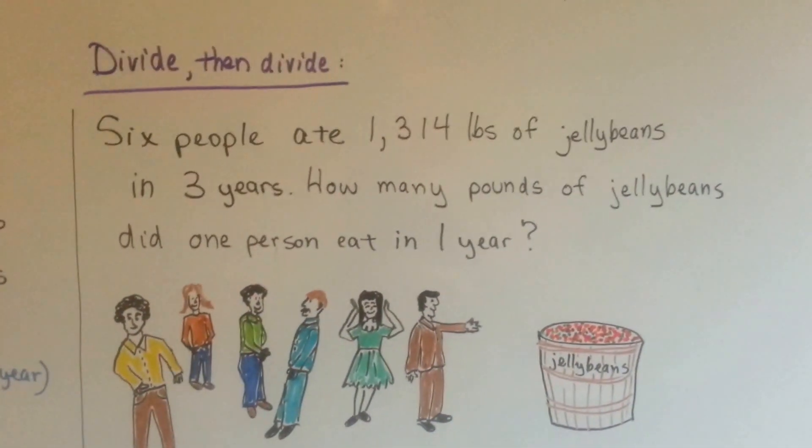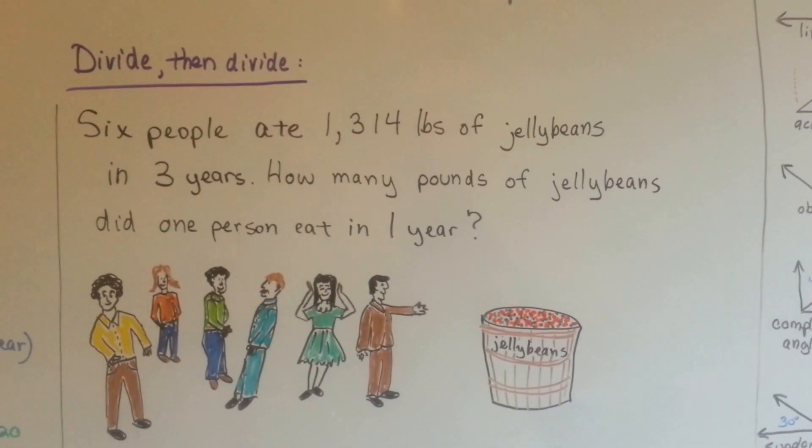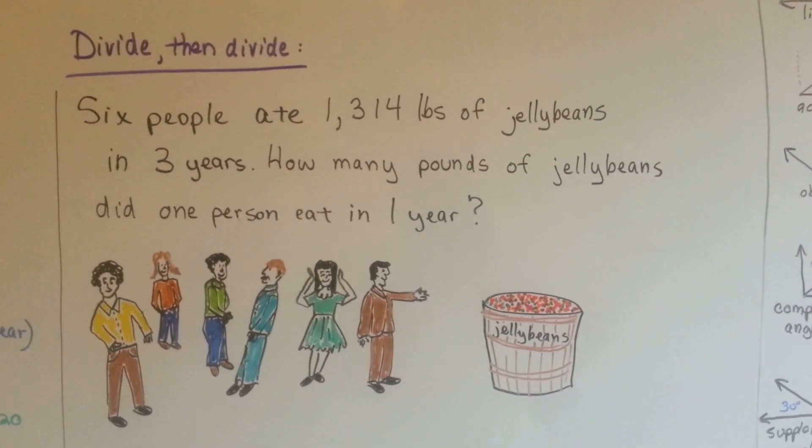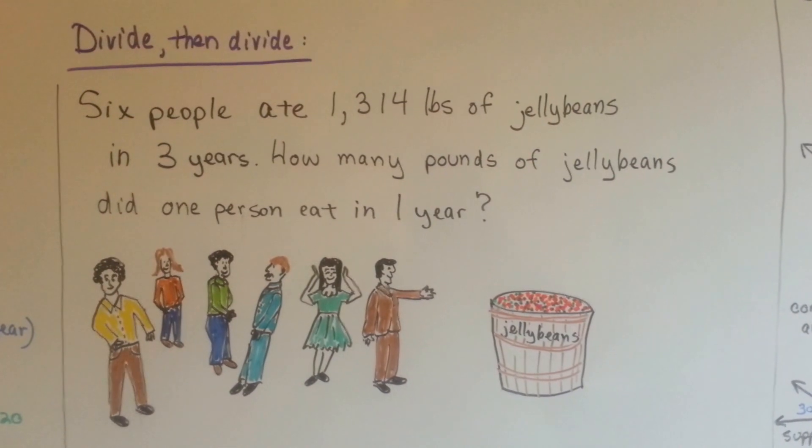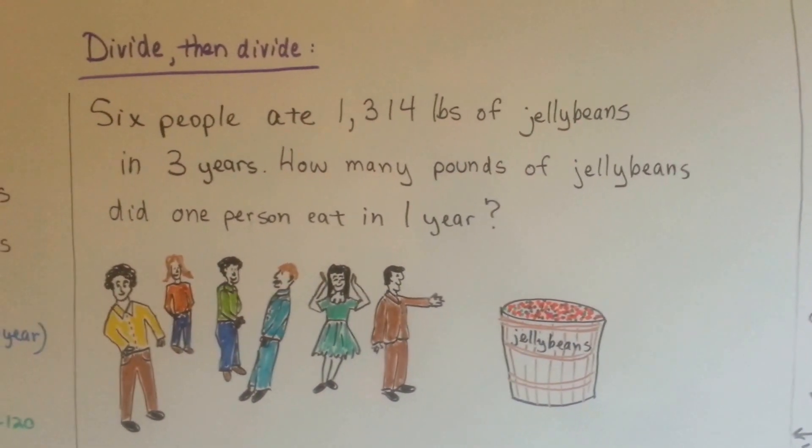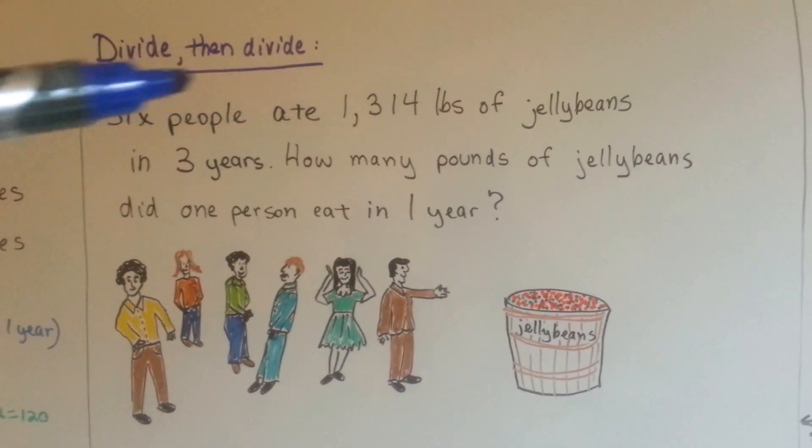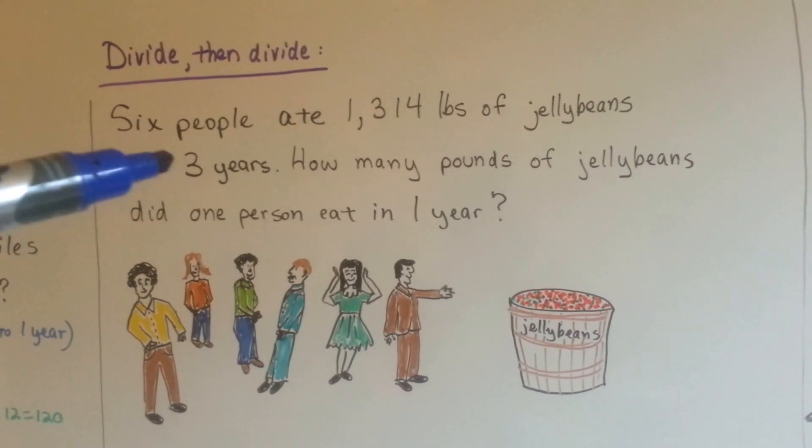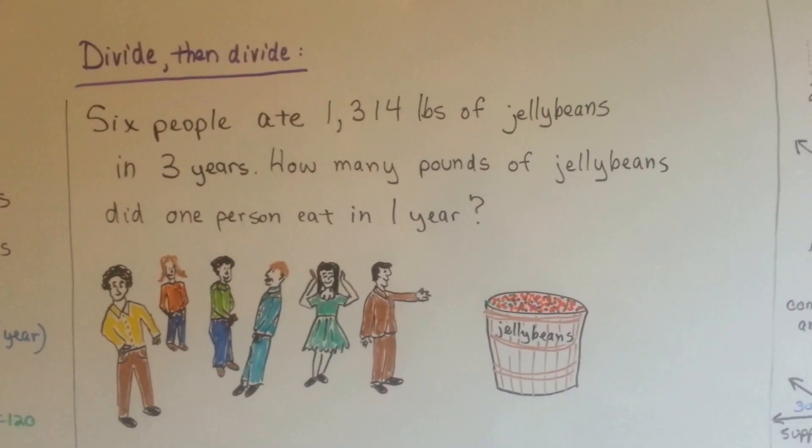This one is a divide, then divide again. Six people ate 1,314 pounds of jelly beans in three years. How many pounds of jelly beans did one person eat in one year? We're going to have to divide the 1,314 pounds by six people. Then whatever that comes out to, we're going to have to divide it by the three years. So we're going to have to divide, come up with an answer, then divide again.